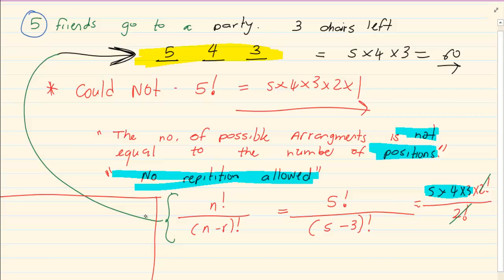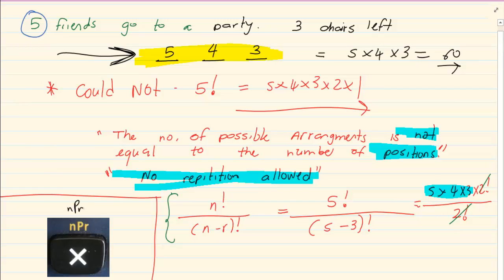Since we have really nice clever calculators, there is a button that looks like this. It is called permutation.